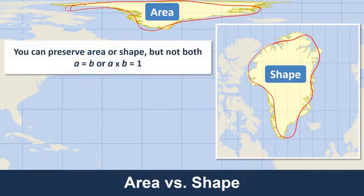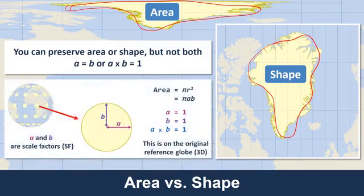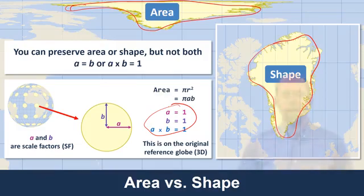You can preserve area or shape, but not both. In other words, either A equals B (conformal) or A times B equals 1 (equal area), but you can't have both things at the same time on a two-dimensional map. On the reference globe that can be the case, but only on a three-dimensional version of the Earth. Once it's two-dimensional, you can either have A equal B but A times B will not equal 1, or vice versa.